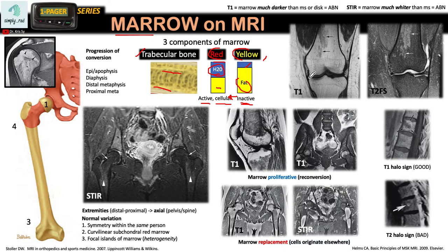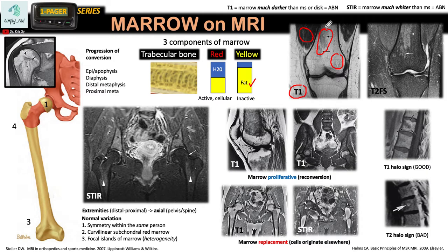On this T1-weighted sequence, the yellow marrow is bright because of its fat content, while the red marrow in the metaphysis is a bit patchy and darker compared to yellow marrow. However, comparing the red marrow with muscle, it is slightly hyperintense relative to muscle, because red marrow still contains more fat than muscle.